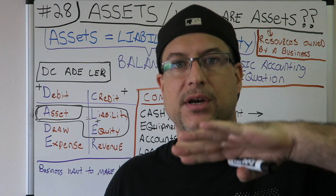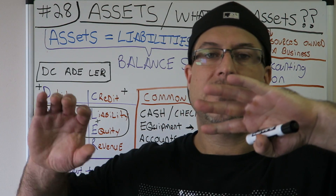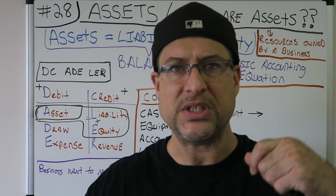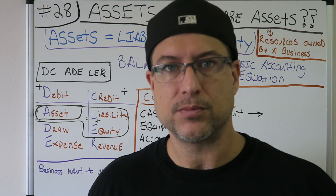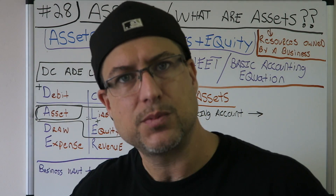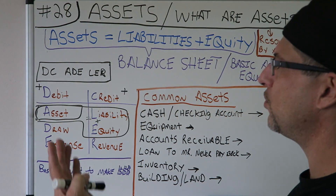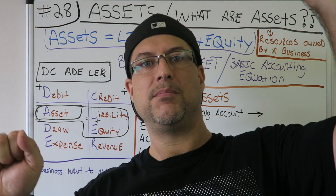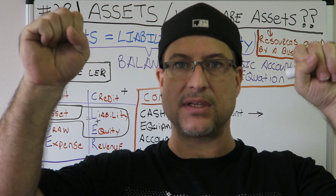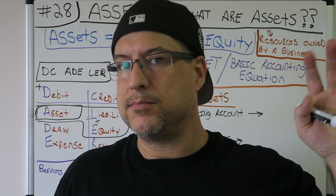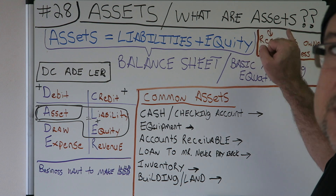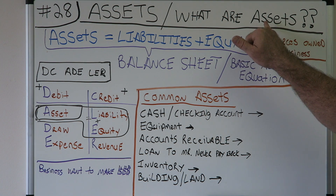The balance sheet is reused and updated every single year. The income statement is just for that period — one year — and whatever happens there carries over to the balance sheet. The balance sheet is super important in accounting. Assets equal liabilities plus equity, so all three are super important. It balances — that's why it's called a balance sheet. One half is assets, and on the other half there are two things: liabilities and equity.